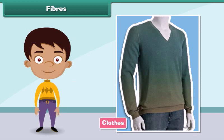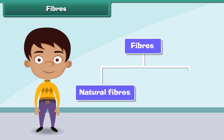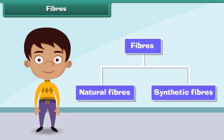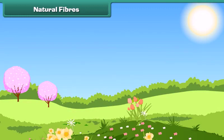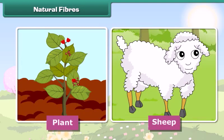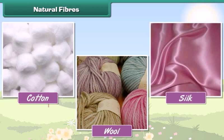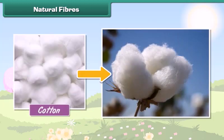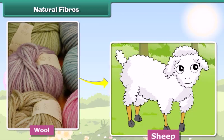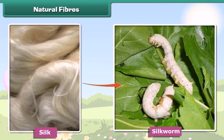Fibers are of two types: natural fibers and synthetic fibers. Natural fibers are made from plants and animals. Some natural fibers are cotton, wool, and silk. Cotton is obtained from plants, wool is obtained from sheep, goats, and camels, and silk is obtained from silk worms.